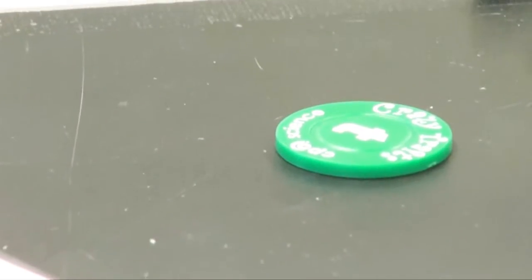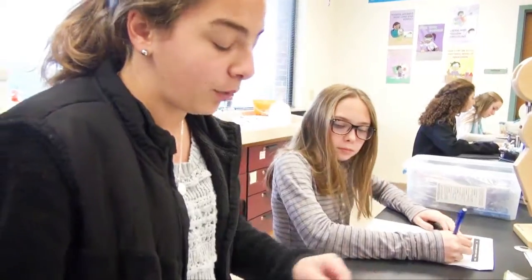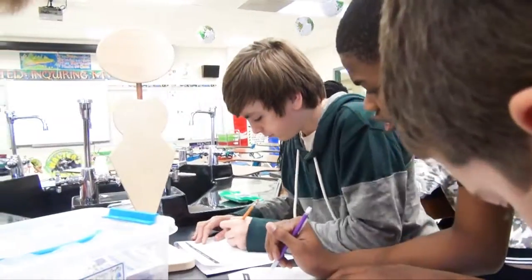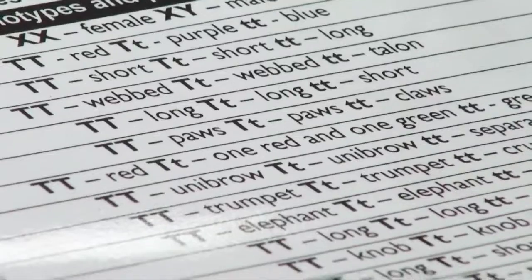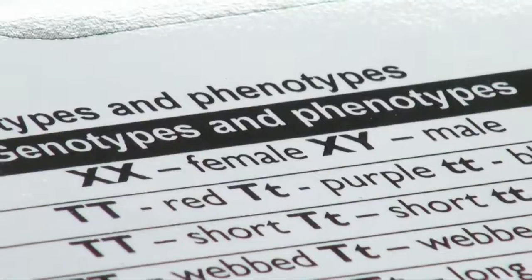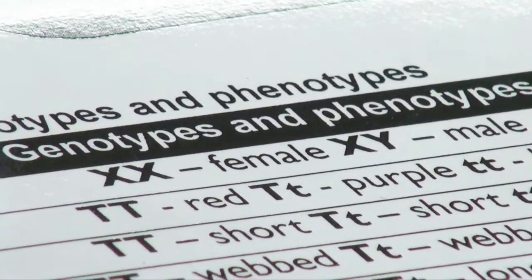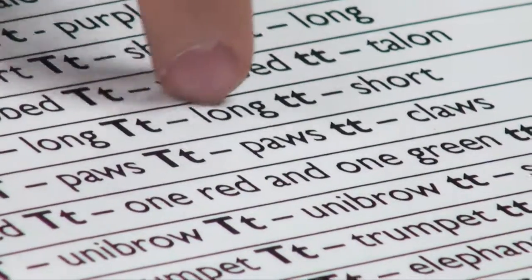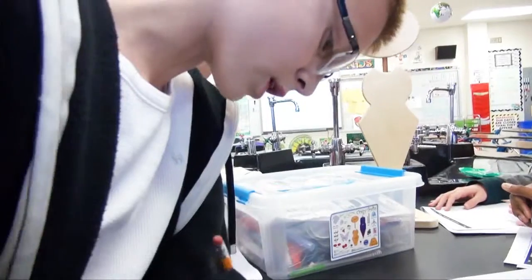Capital T, rural D is purple. Hands — paws. Antenna — short. Antenna shape — knob. Tail — long. Wings — no wings.